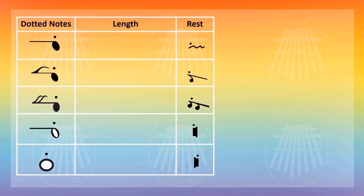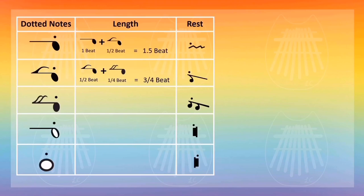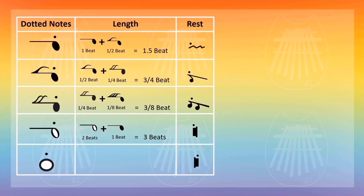Next, let's talk about dotted notes. A dot makes a note or rest longer by 50%. For a quarter note, it would be 1 beat plus half a beat, which is 1.5 beats. For an eighth note, it would be half a beat plus a quarter beat, which is 3/4 of a beat. For a sixteenth note, it would be 3/8 of a beat. For a half note, it would be 3 beats. For a whole note, it would be 6 beats. When you see a dot above these notes or rests, that makes them 1.5 times longer.